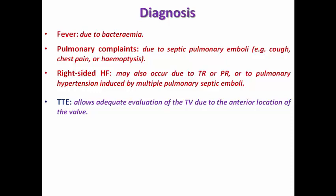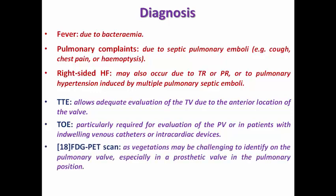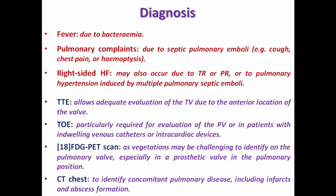Transthoracic echocardiography is the first investigation to order, as it allows adequate evaluation of the tricuspid valve due to its anterior location. Transesophageal echo is needed to evaluate the pulmonary valve — which is less adequately visualized by transthoracic echo — or in patients with indwelling venous catheters or intracardiac devices. Vegetation may be difficult to identify especially on a prosthetic pulmonary valve, so PET scan can identify abnormal fluorodeoxyglucose uptake. Always request CT chest to identify concomitant pulmonary disease from septic emboli, including infarcts, abscess formation, pleural effusion, or empyema.